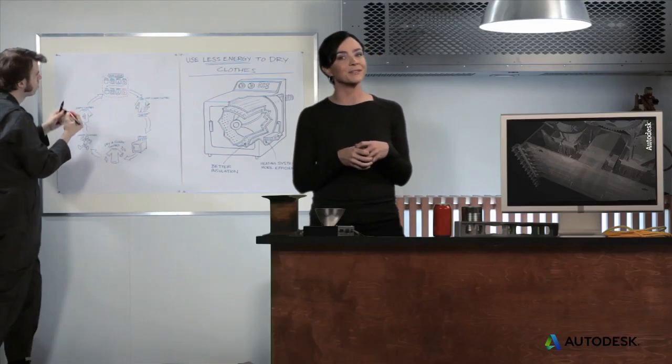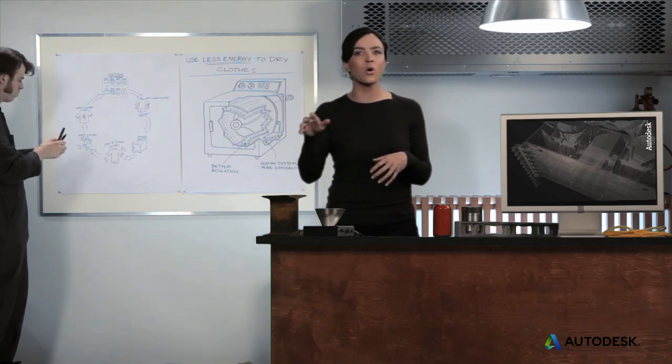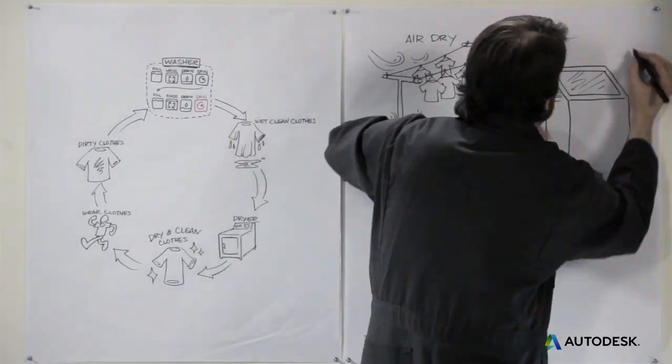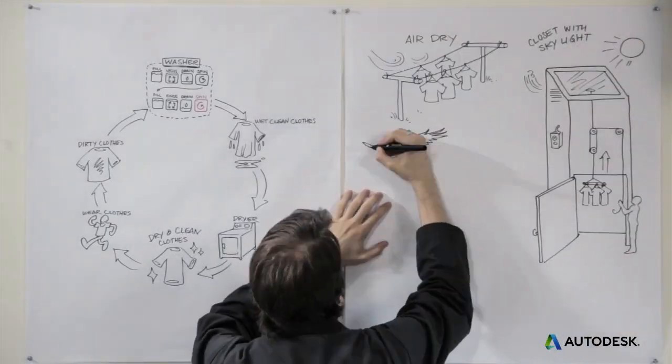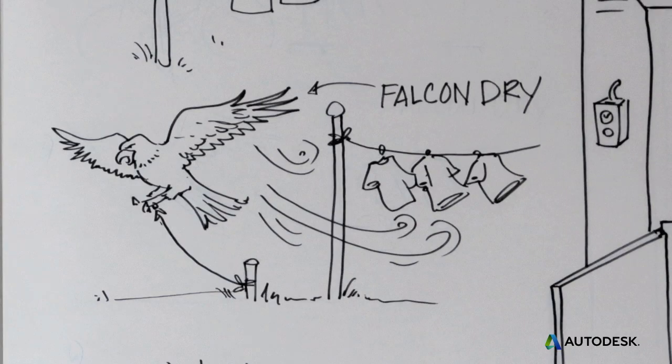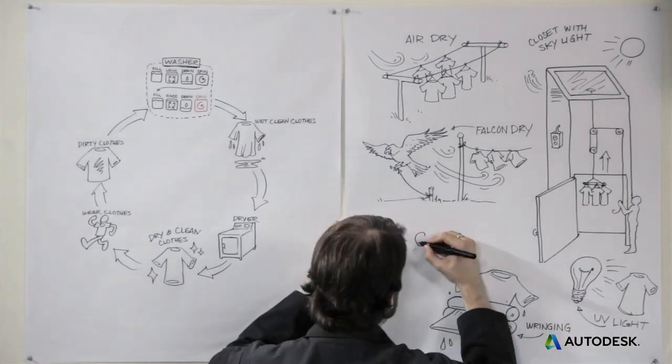This is just one strategy. By brainstorming, you might come up with a whole slew of other ones. Approaching the problem with a blank slate can help lead you to more drastic innovations like eliminating the dryer altogether from the system in favor of a next-generation clothesline, or creating fabrics that need to be cleaned less often.